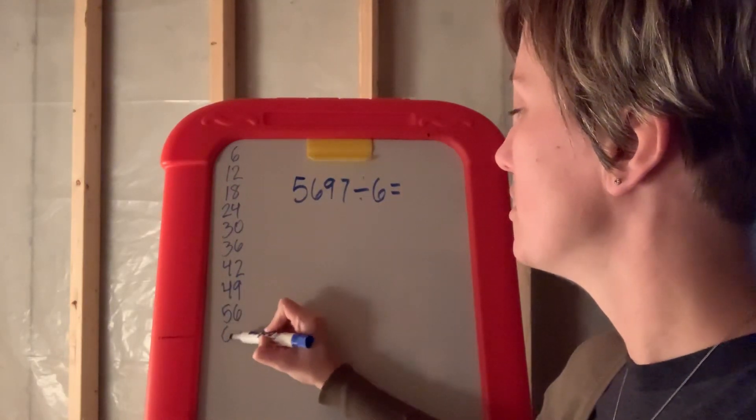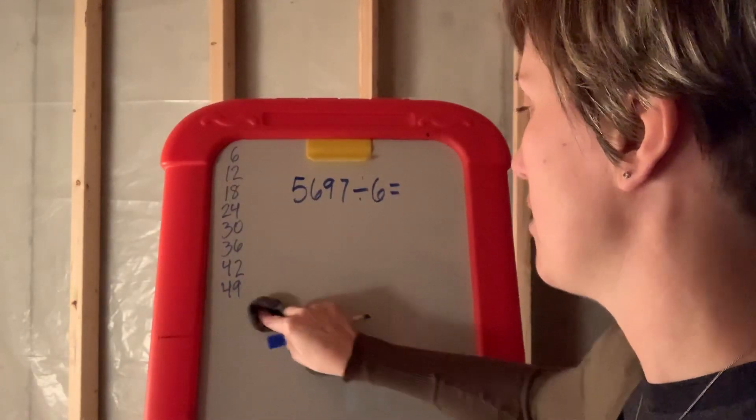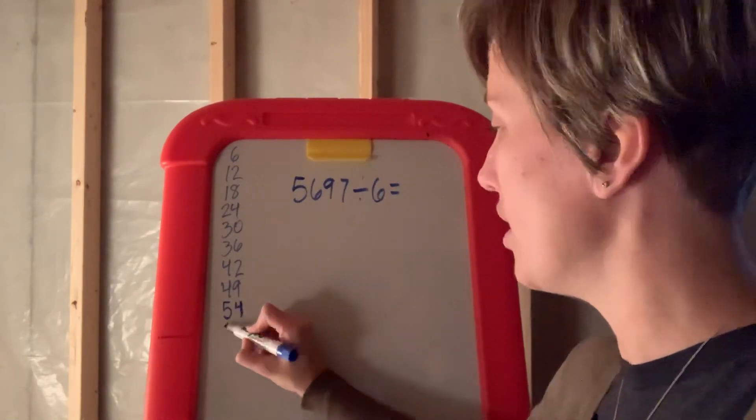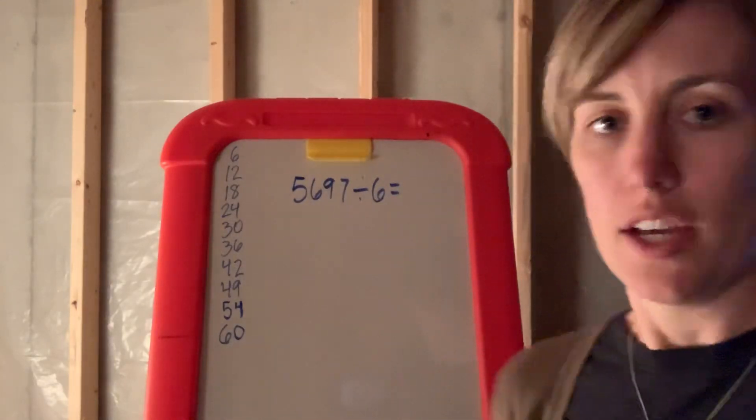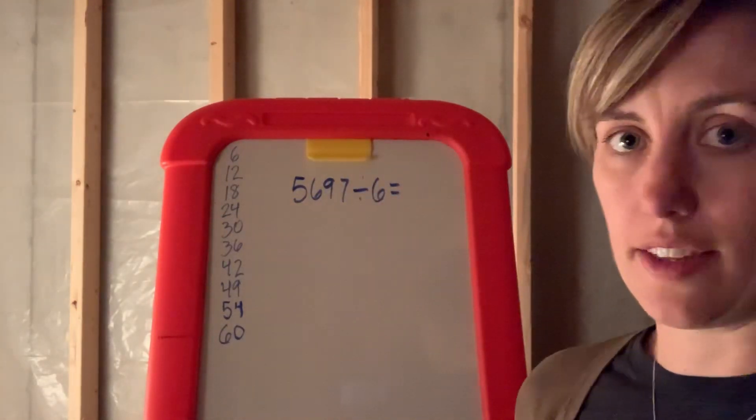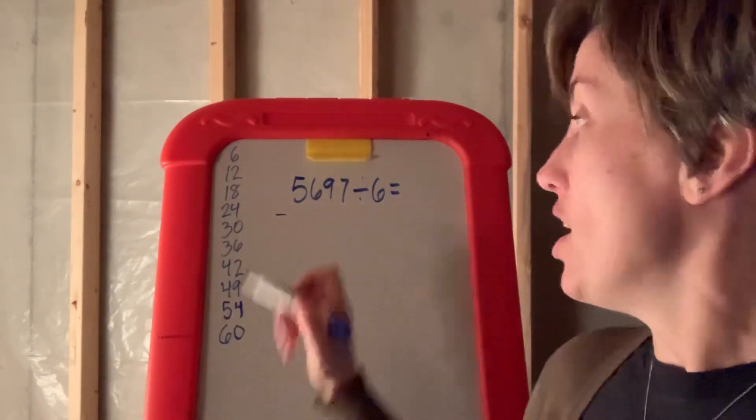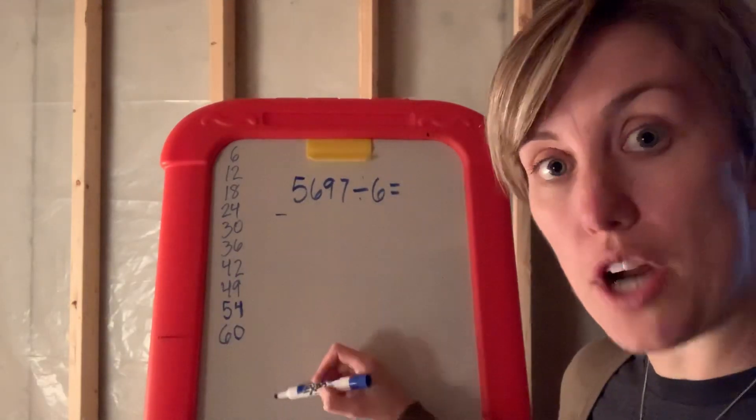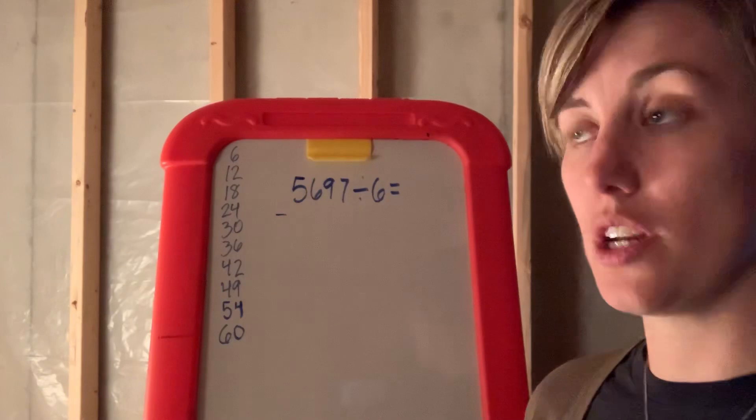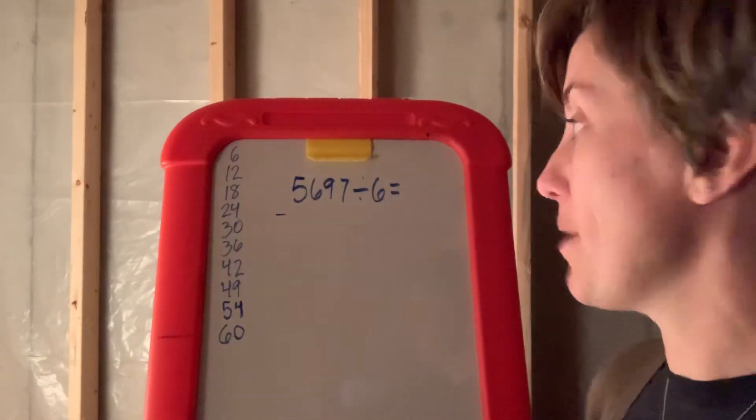Here we go. 6, 12, 18, 24, 30, 36, 42, 48, 54, 60. There we go. So when you have a large number like this, you need to subtract a large number. The reason for that is the more times you subtract, the more times you give yourself an opportunity to make a mistake. So we want to subtract as large a number as possible so that we don't make a mistake.